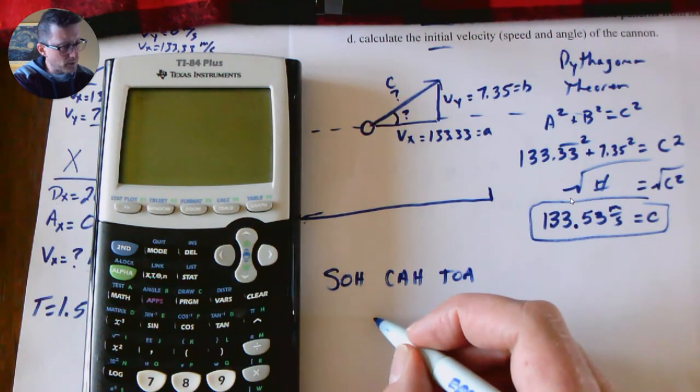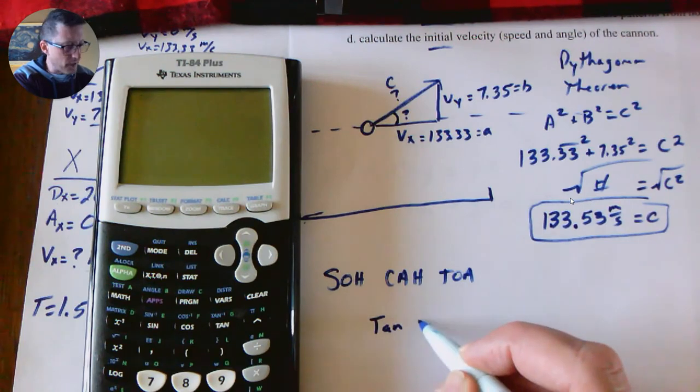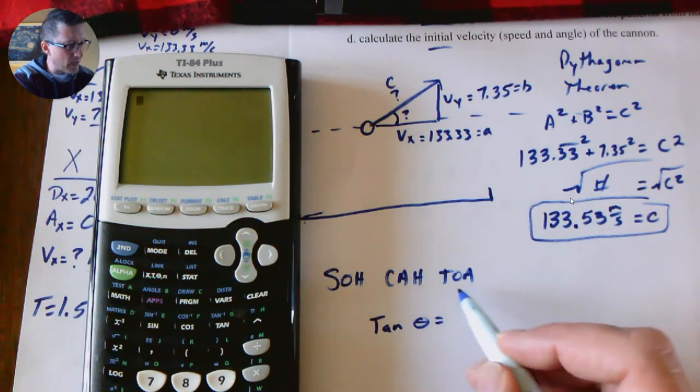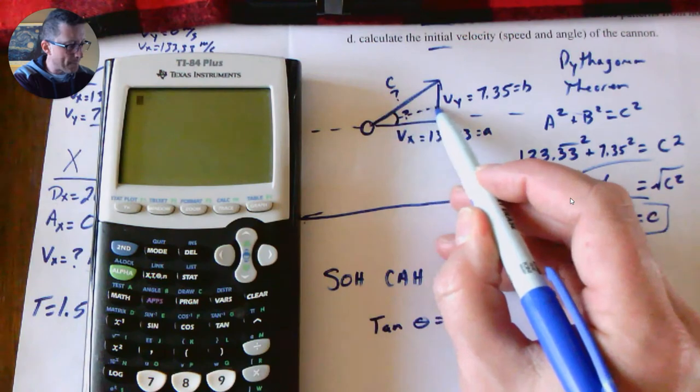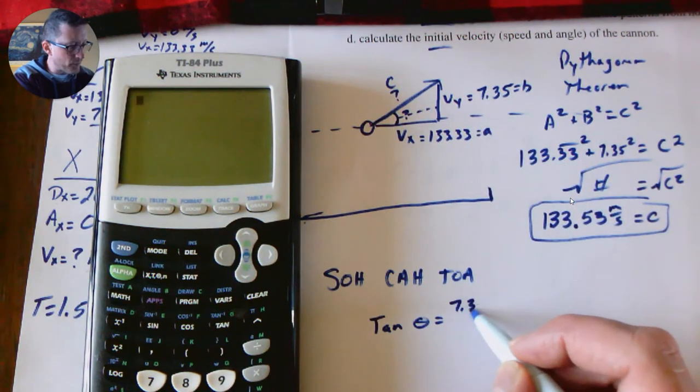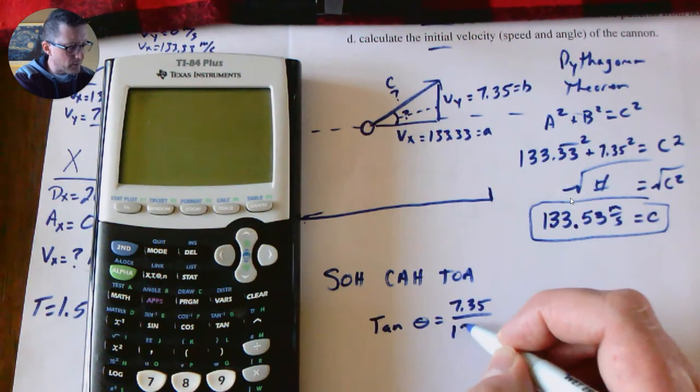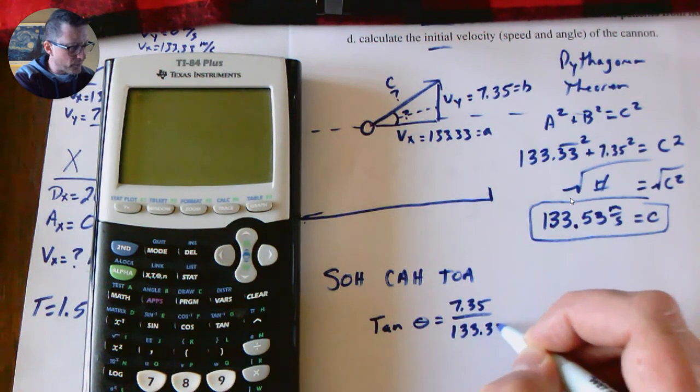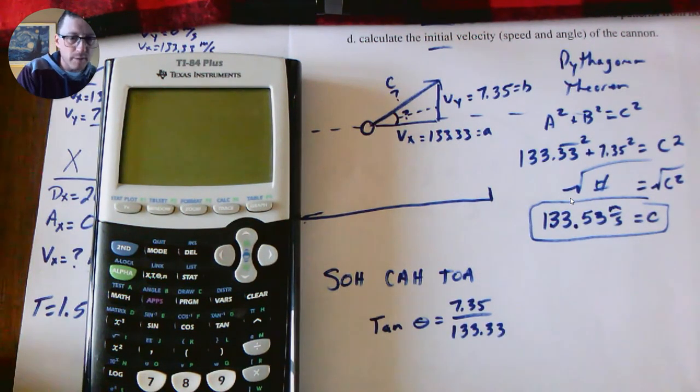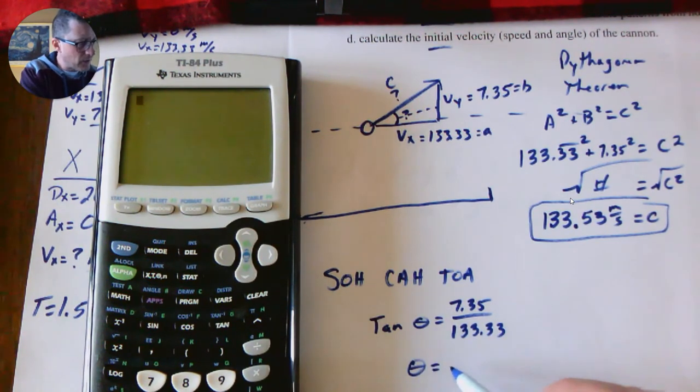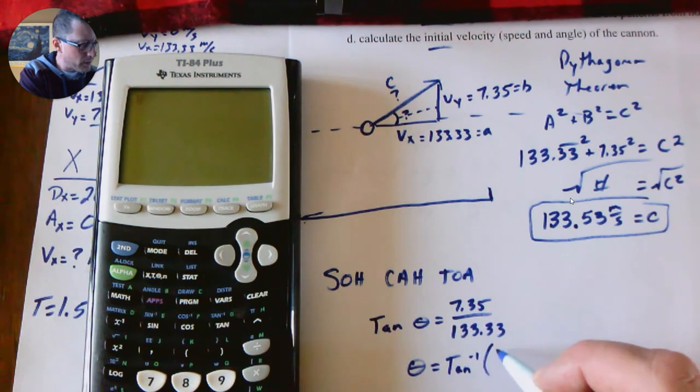So tangent remember means opposite side divided by the adjacent side. So we're going to say tangent of theta, of our angle, equals the opposite side, opposite 7.35, over the adjacent 133.33. So on the calculator though, to do this, to get the angle, I'm going to take tangent and it's negative one of that fraction.